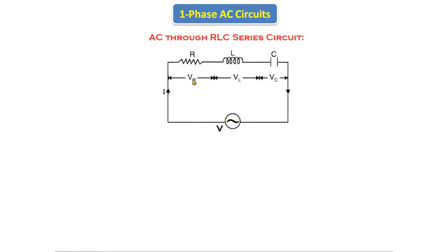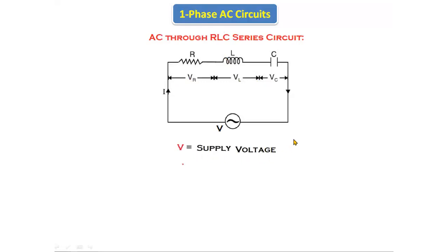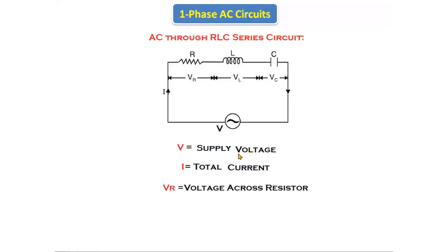Here, VR is the voltage across the resistor, VL is the voltage across the inductor, and VC is the voltage across the capacitor. I is the total current passing through the circuit. As it is a series circuit, the current through the circuit is the same, but the voltage is divided among the three elements — VR, VL, and VC. V is the total voltage and I is the total current. We are giving AC supply.